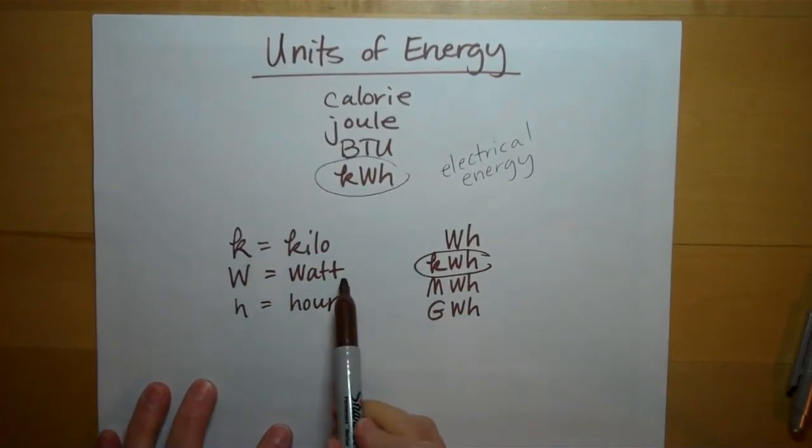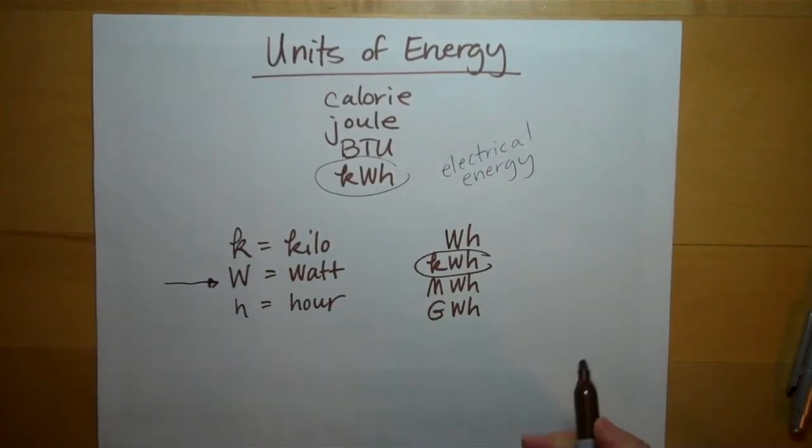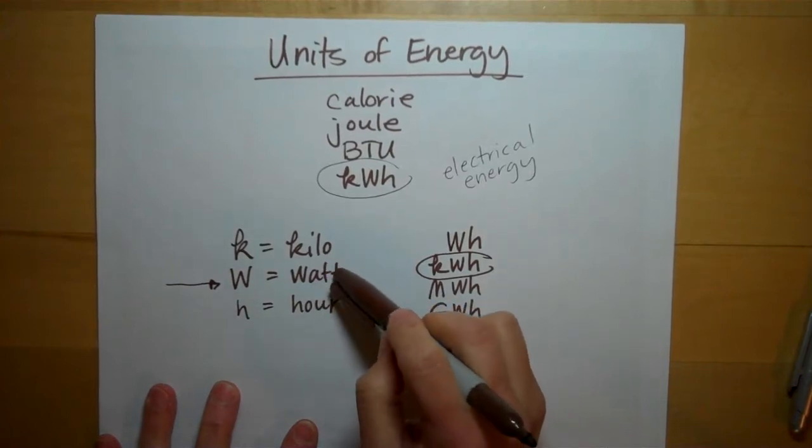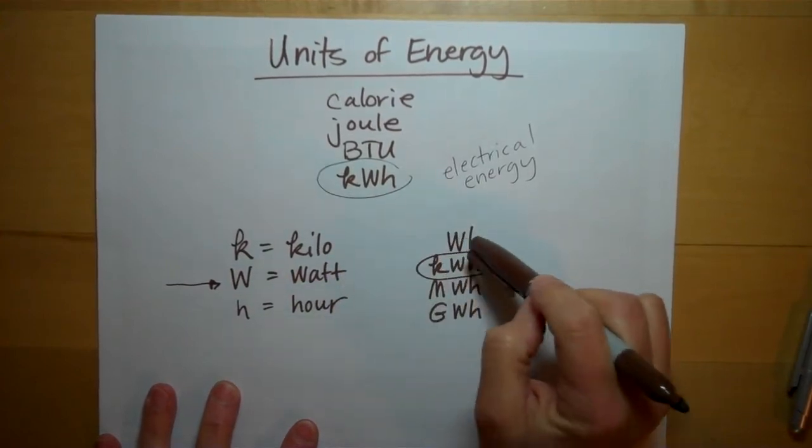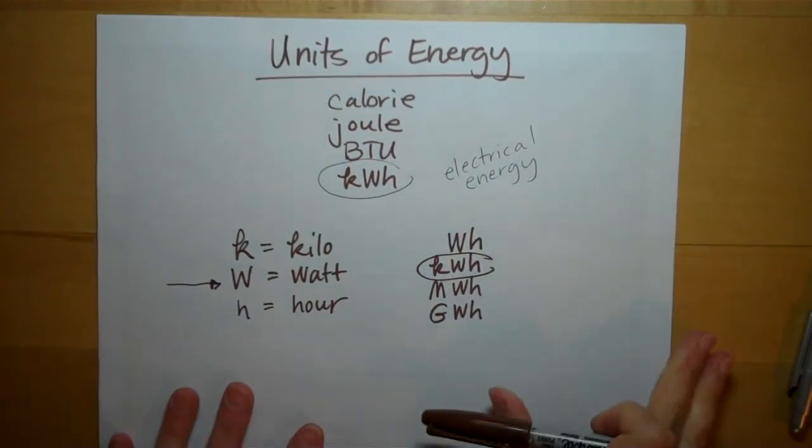Now, this right here, the watt, is the source of some of the confusion. Because a watt all by itself is a measure of power. But a watt hour is a measure of energy. And they're two different things.